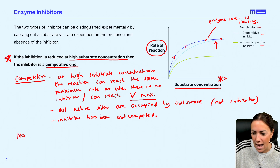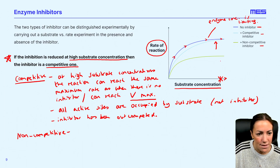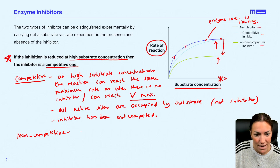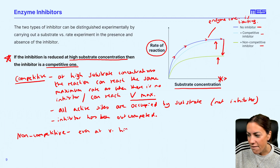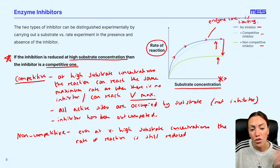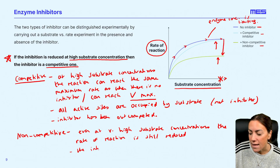It's not the same for non-competitive though. Look at the green line. If it's a non-competitive inhibitor, the rate of reaction is reduced at all substrate concentrations — it's always lower. Even at very high substrate concentrations, the rate of reaction is always reduced, always lower than when there is no inhibitor. It will not reach Vmax — it will never reach the same maximum rate as if there were no inhibitor.